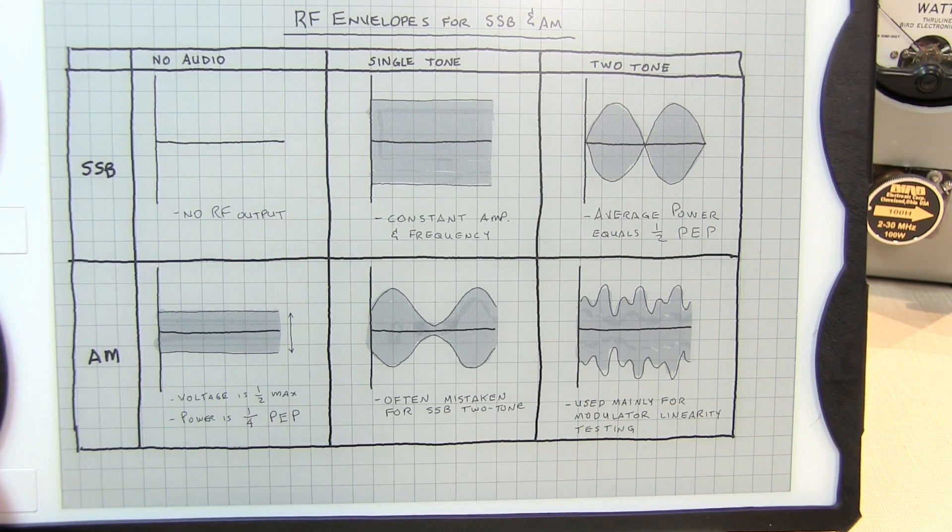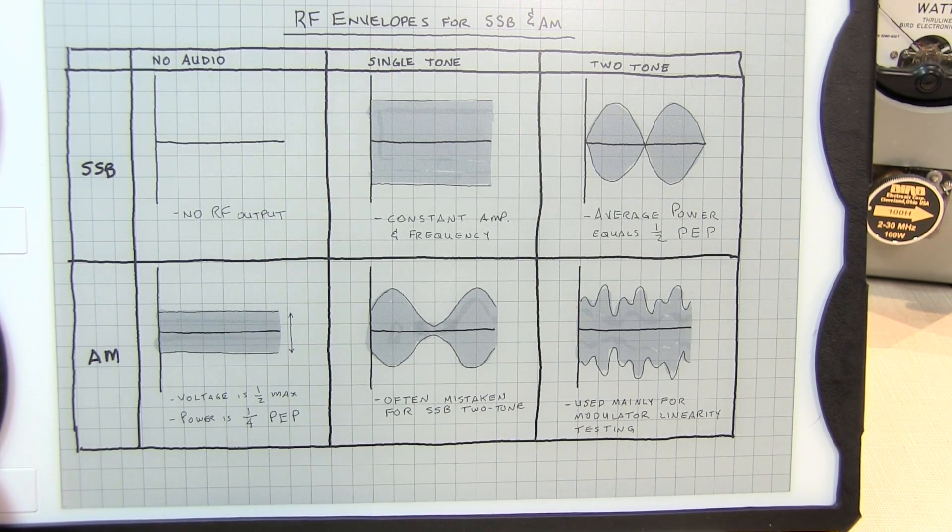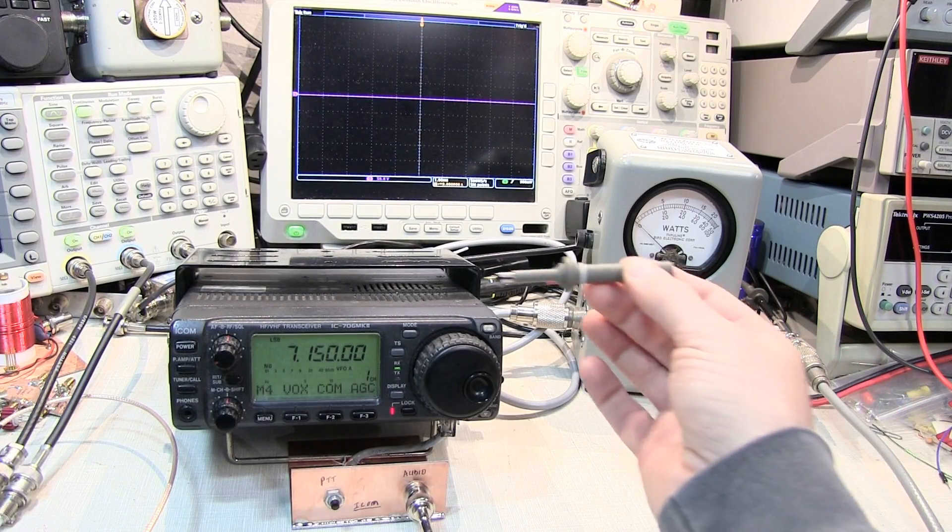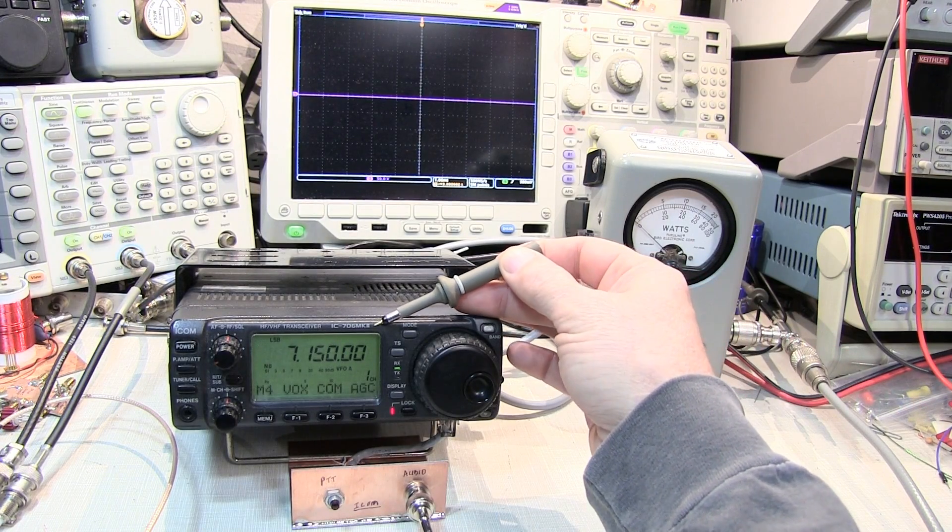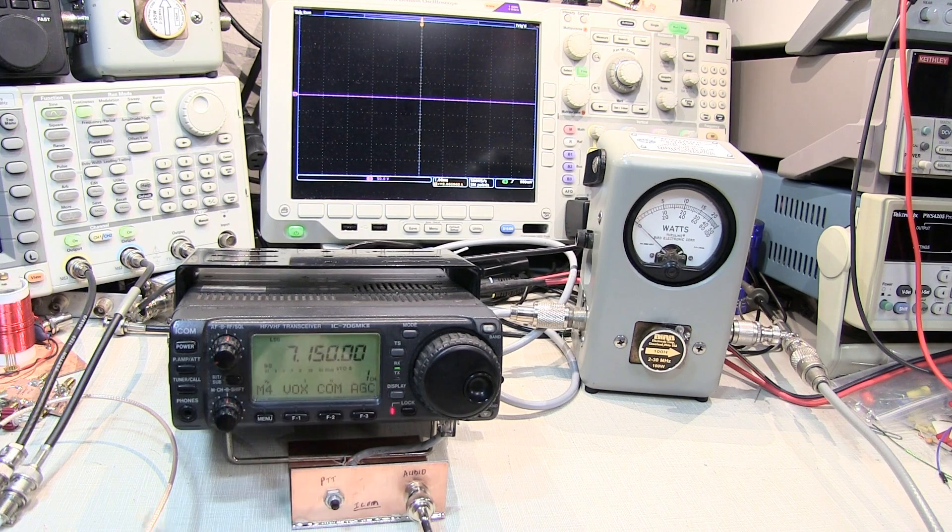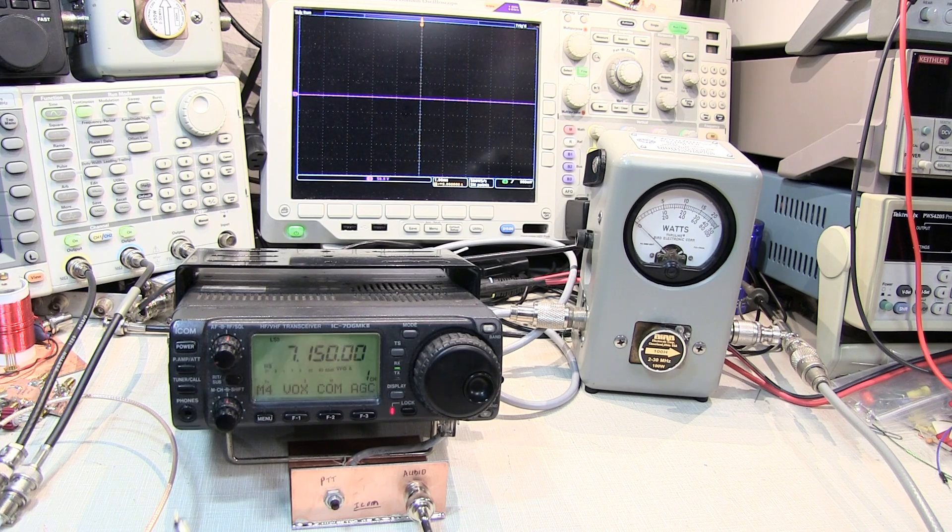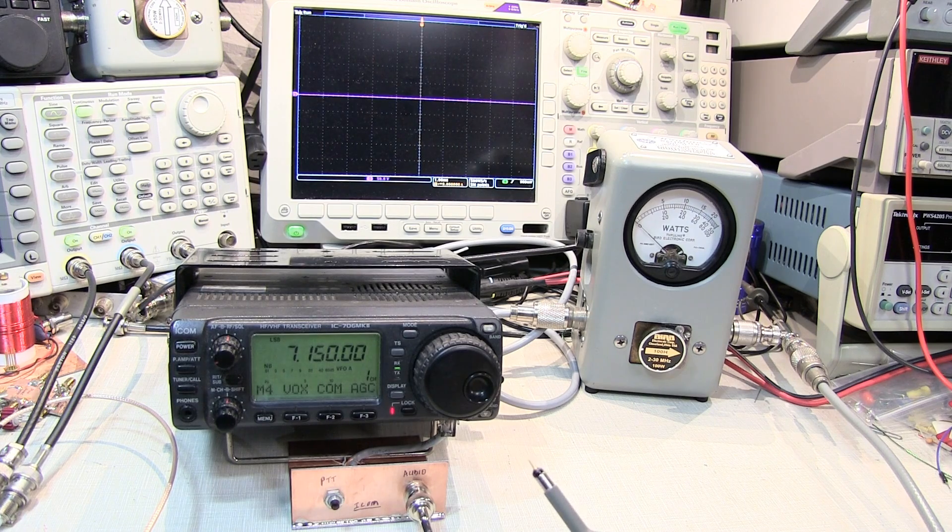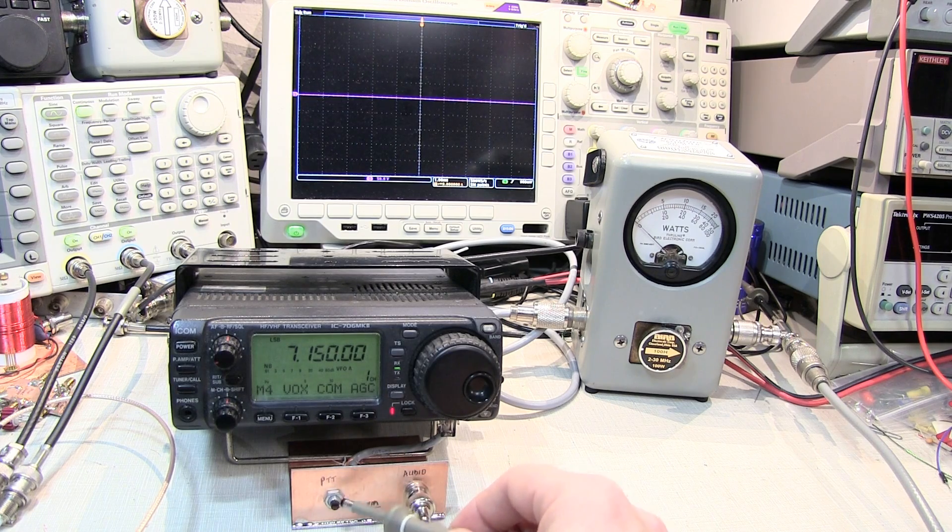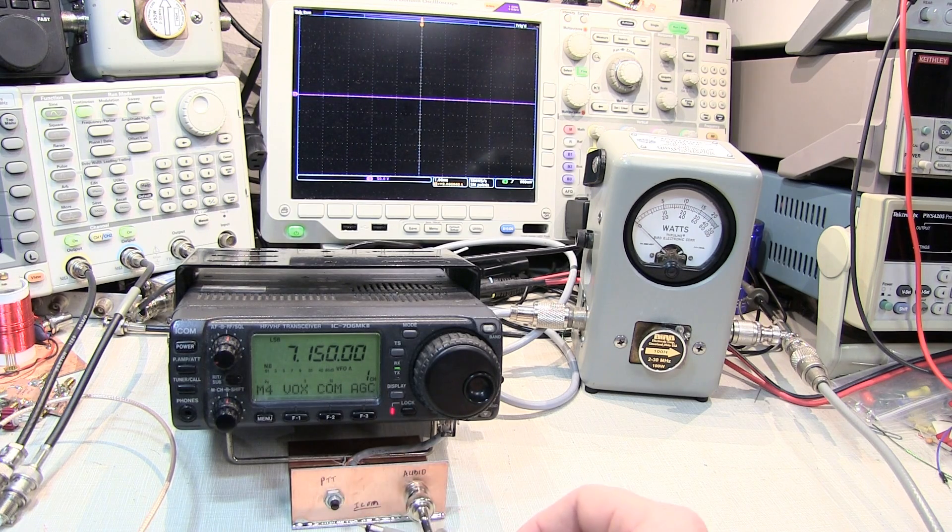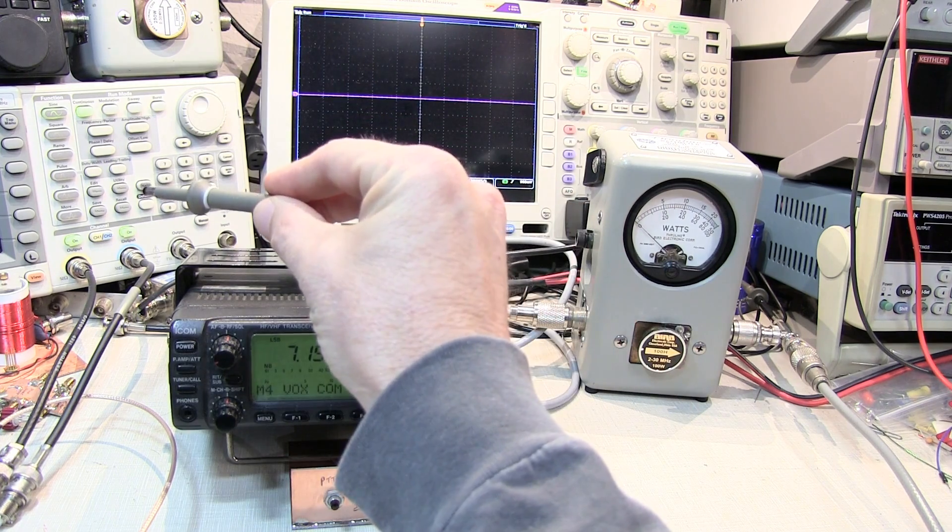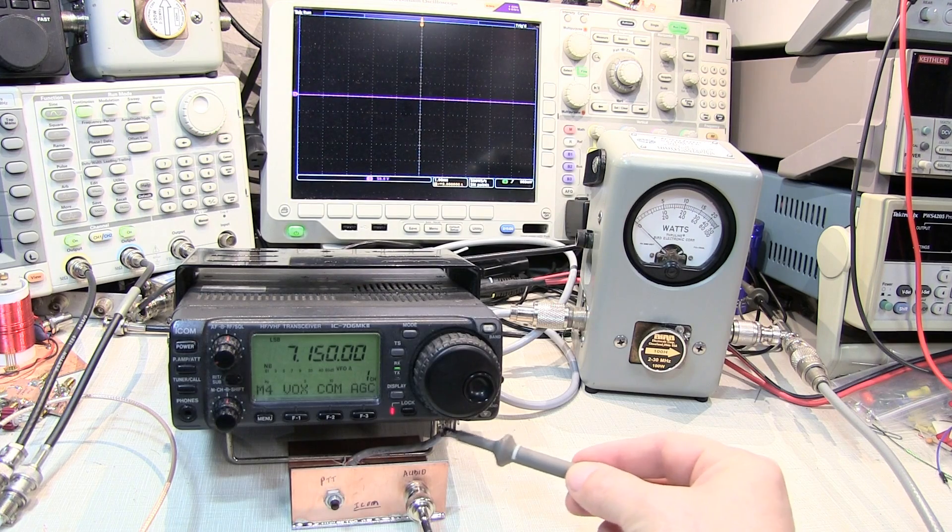So let's go take a look at some of these envelopes on the scope and how they relate to power measurements made with an RF power meter. We're making the measurements today on an ICOM IC706, which is a 100-watt HF rig. We'll just be making the measurements in the 40-meter band at 7.150 MHz. In order to inject our test tones into the microphone input, I simply built a little fixture that has a PTT, or press-to-talk switch, and an audio input that interfaces the audio signal from my signal generator into the mic audio input of the radio.